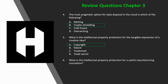Question six: what is the intellectual property protection for a useful manufacturing innovation? Is it A) copyright, B) patent, C) trademark, or D) trade secret? If you said B, patent — you would be right, because patents protect processes as well as inventions, new plant life, and decorative patterns.